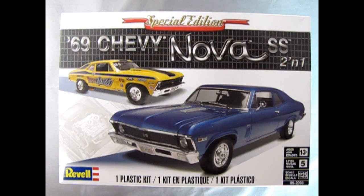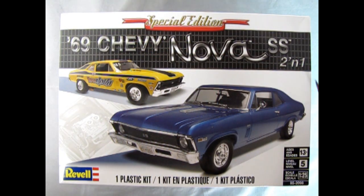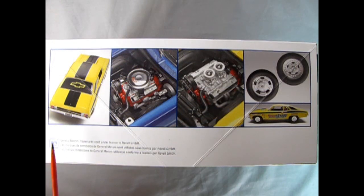So now let's go down to the bench and see what's in the box. The Special Edition Revelle 1969 Chevrolet Nova SS 2-in-1 model kit is a skill level 5 kit for ages 13 and up, molded in 1/25th scale.